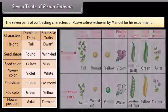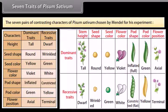The seven pairs of contrasting characters of Pisum sativum chosen by Mendel for his experiment.